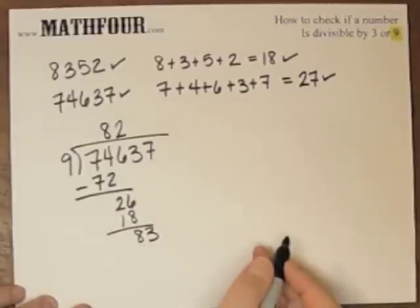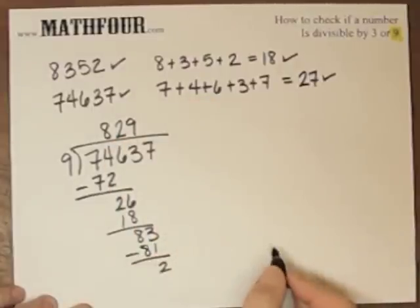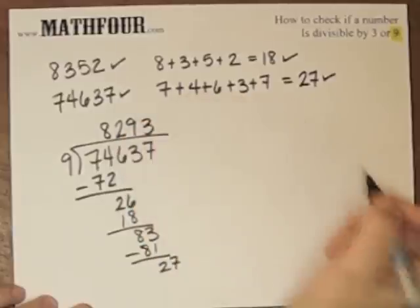9 goes into 83. 9 times 9 is 81, so that one's okay. Not too uncomfortable there. And then 27, oh my gosh. 9 goes into 27 three times.